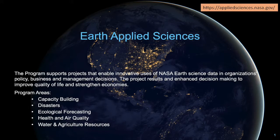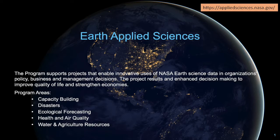The Applied Sciences program supports partner organizations and research scientists who are using Earth observations to solve the world's toughest challenges. From local communities to national governments, and across every region of the world, our collaborative projects have outsized impact. The program's focus areas include capacity building, disasters, ecological forecasting, food security and agriculture, health and air quality, and water resources.